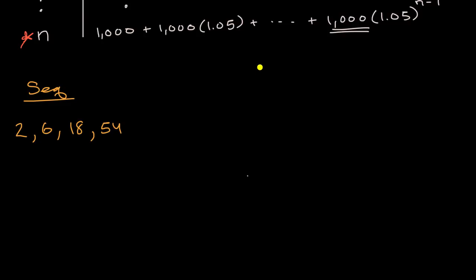Now, if we want to think about the geometric series, or the one that's analogous to this, is that we would sum the terms here. So this would be 2 plus 6 plus 18 plus 54.